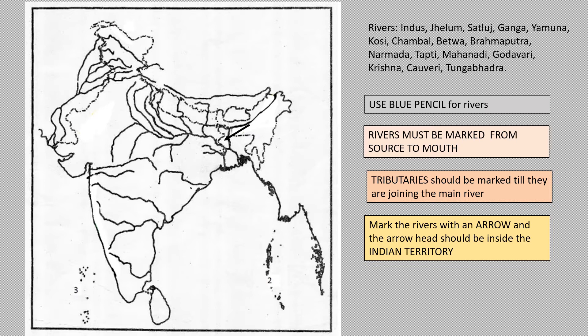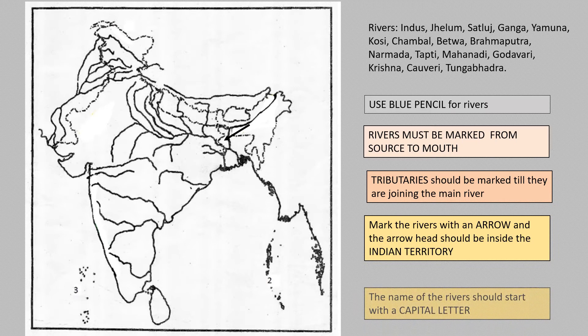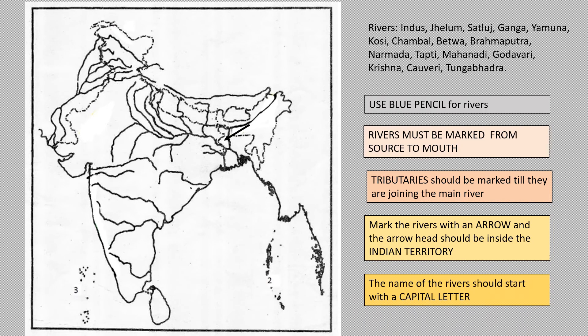For example, Indus is flowing through Pakistan, but your arrowhead should be inside Indian territory. The name of the river should start with a capital letter, or all letters can be in capitals. While labeling, you can use black pen or pencil.